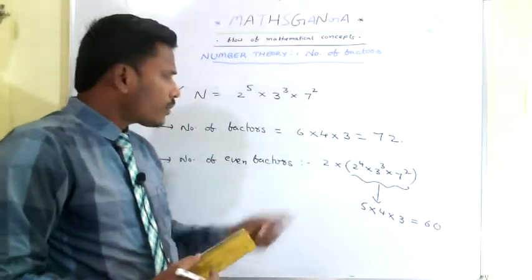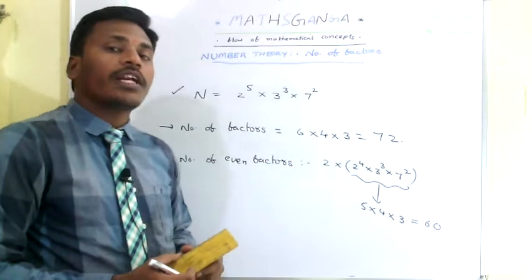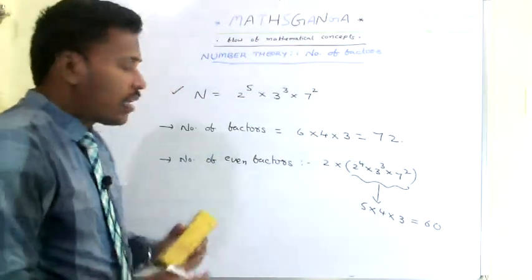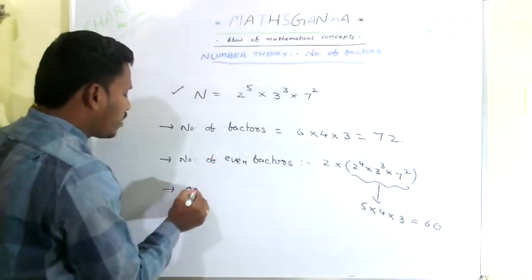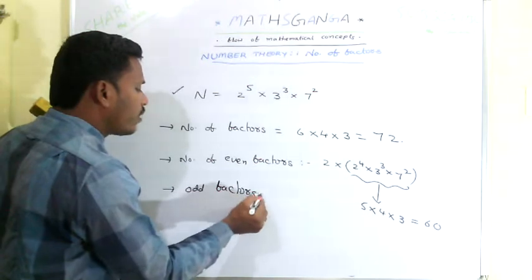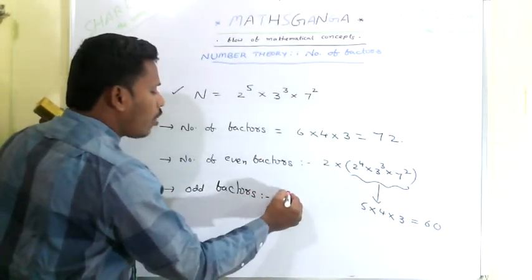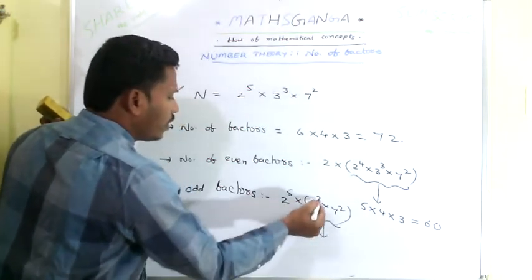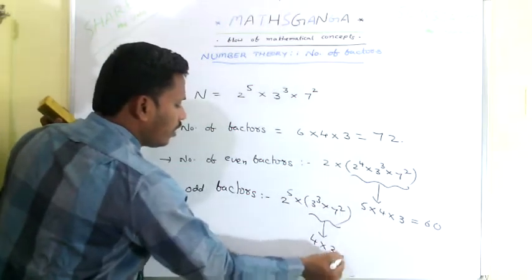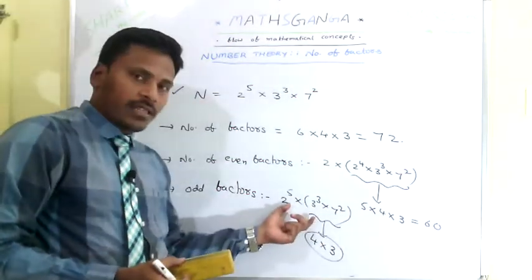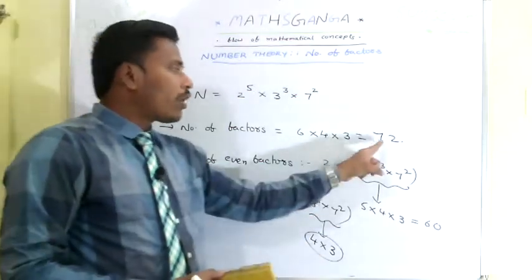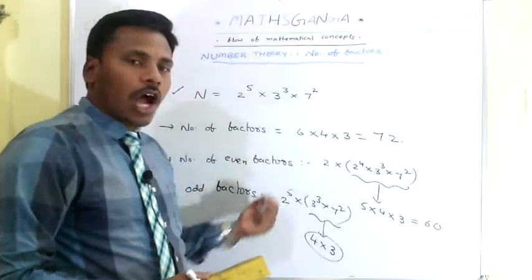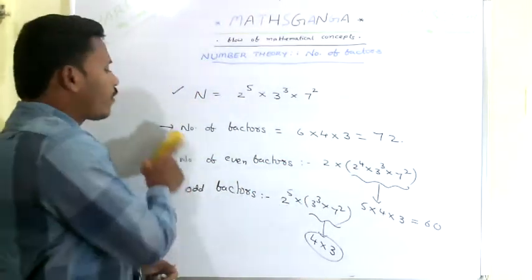Since the total number of even factors are 60 and the number of factors are 72, the number of odd factors are 72 − 60 = 12. This is one way of finding odd factors: total number of factors minus even factors. The other way is, for odd factors, separate all the 2s out: from 2^5 × 3^3 × 7^2, leaving out 2^5, just count the factors of 3^3 × 7^2, which is (3+1)(2+1) = 4 × 3 = 12. So the number of odd factors are 12, the number of even factors are 60, and total factors are 72.